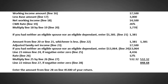Now we need to get an adjustment: line 23 minus line 24. If negative, enter 0. In this case, we get a value of $4,436, which is the difference between $17,500 and $13,064. The rate is 12% on line 26, so we multiply 12% by $4,436 and arrive at a value of $532.32, which is written on line 27.